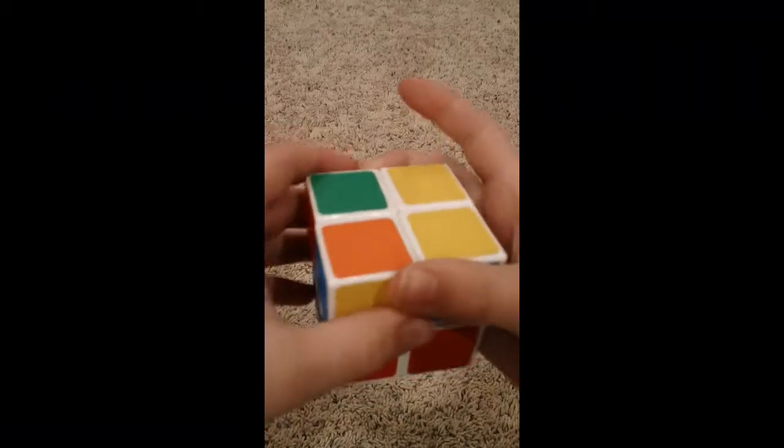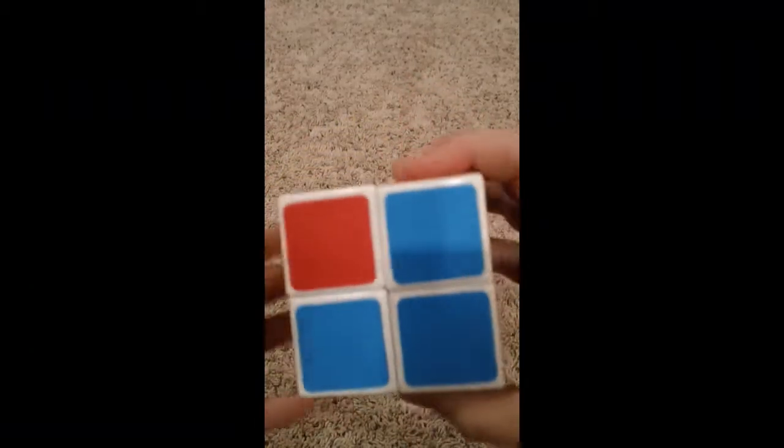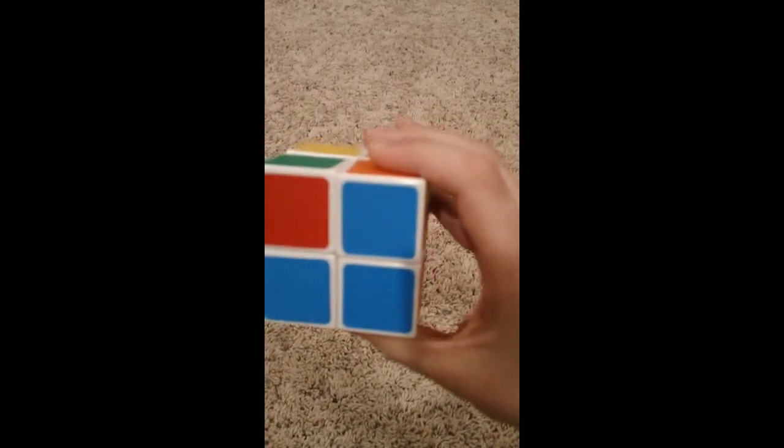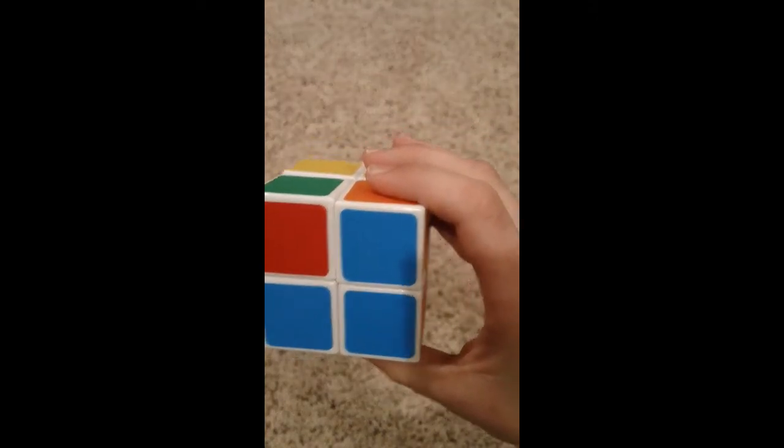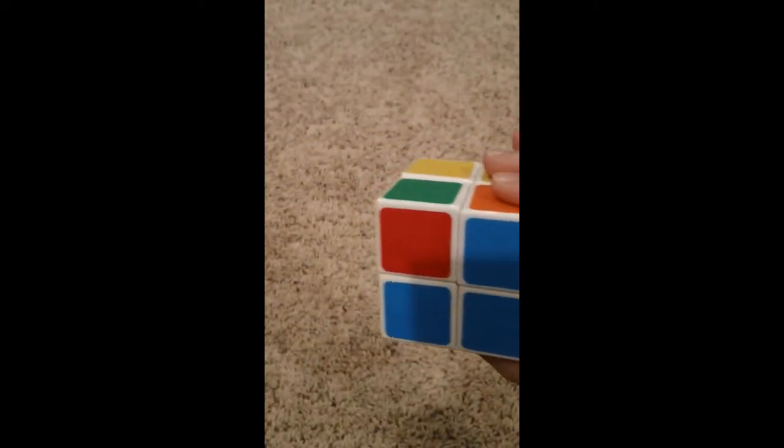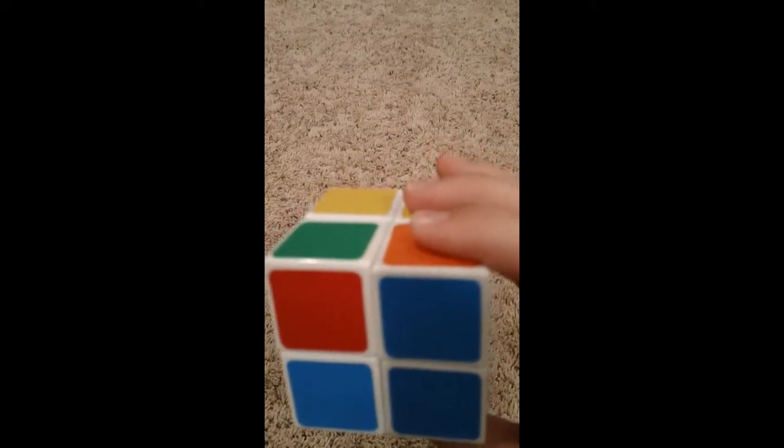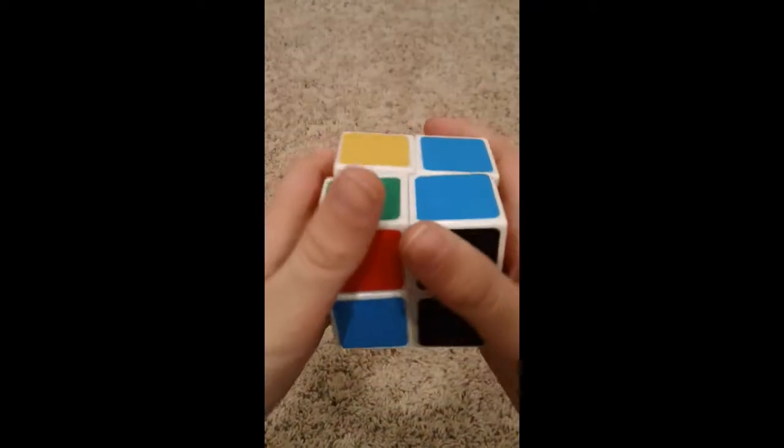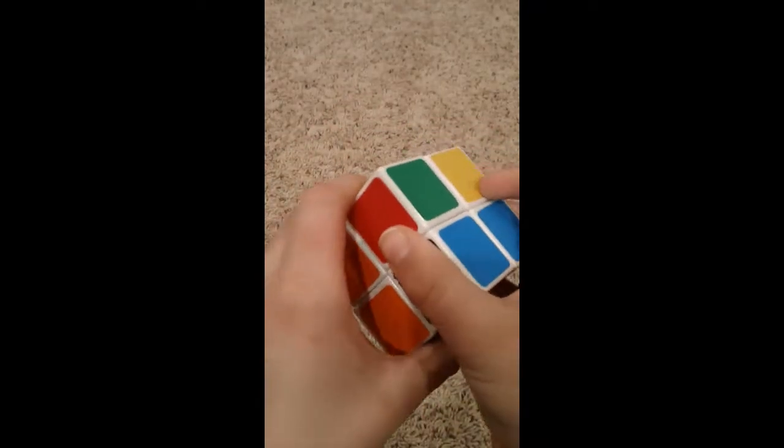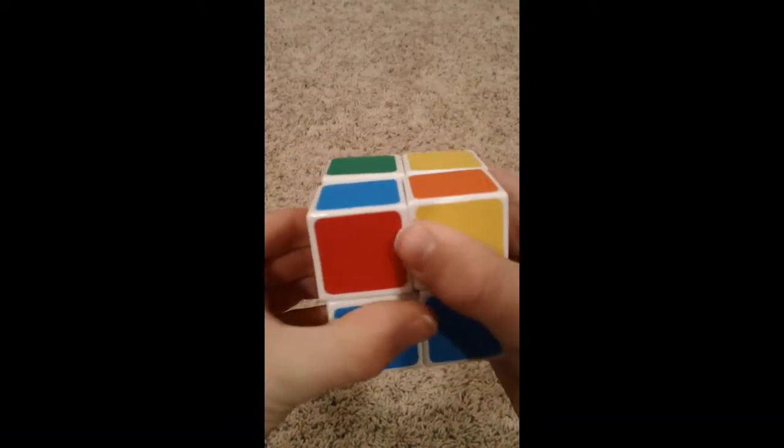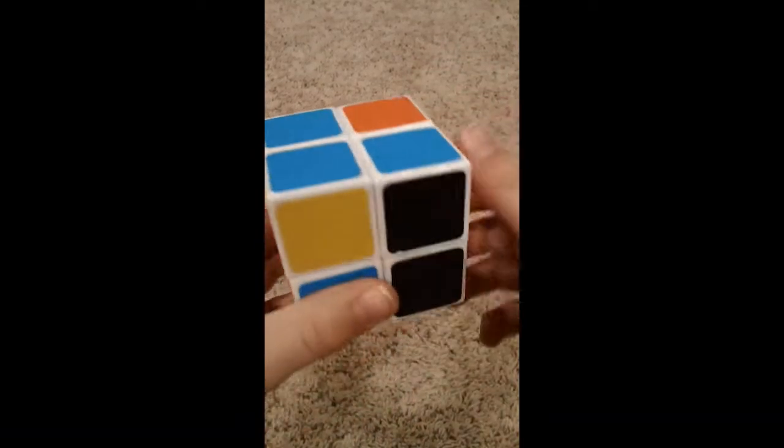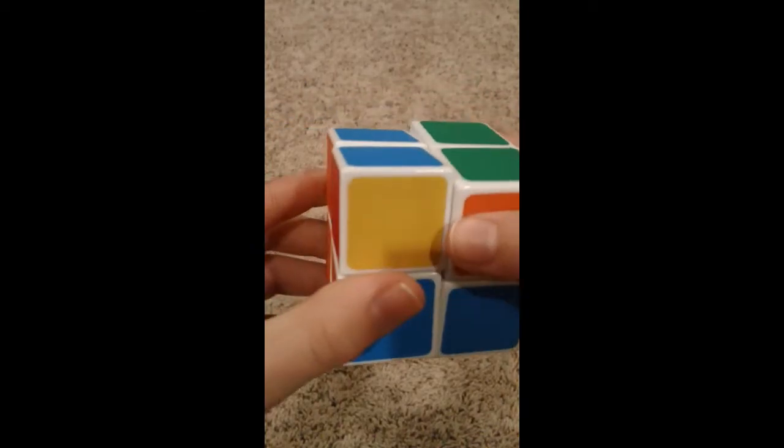So the next thing you want to do is solve the yellow side. This will be your first algorithm. It's fairly simple. If I mess up, bear with me guys, because I haven't solved the 2x2 in a little while, but I still remember it. So the algorithm is R, U, R, U, R2, U, R, and there we go.